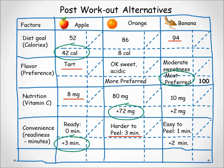Continuing with our example: in relation to the banana's most preferred advantage in the flavor factor, we score the orange's nutrition advantage as 85, the apple's convenience factor advantage as 70, and the apple's diet goal advantage as 35.